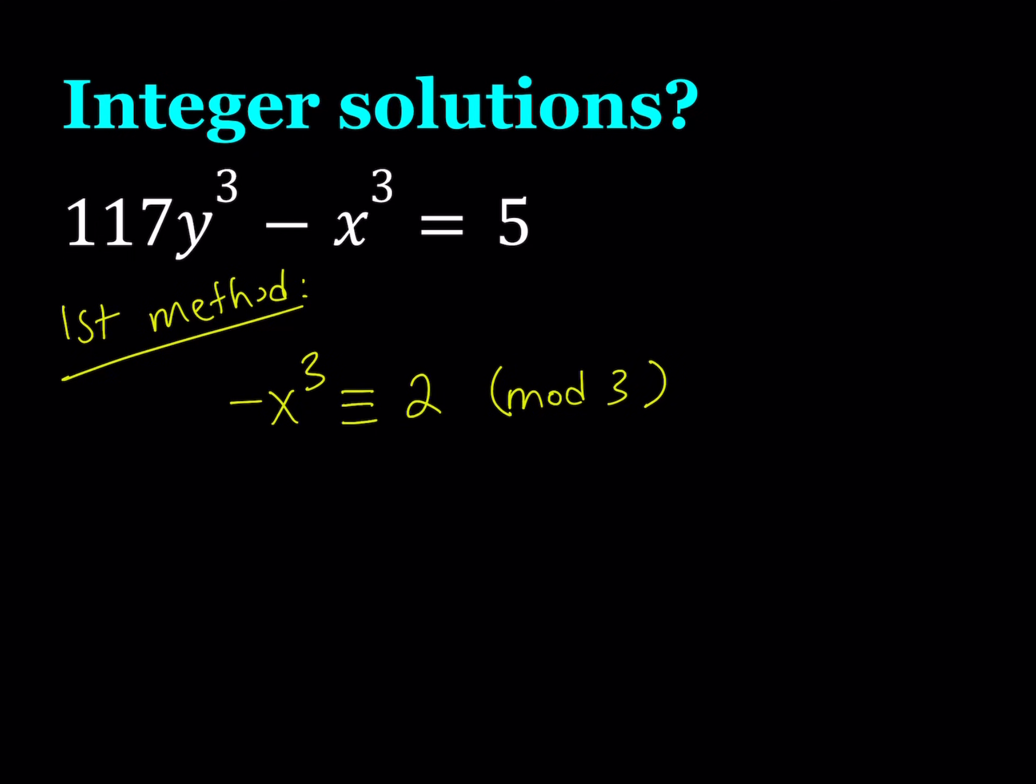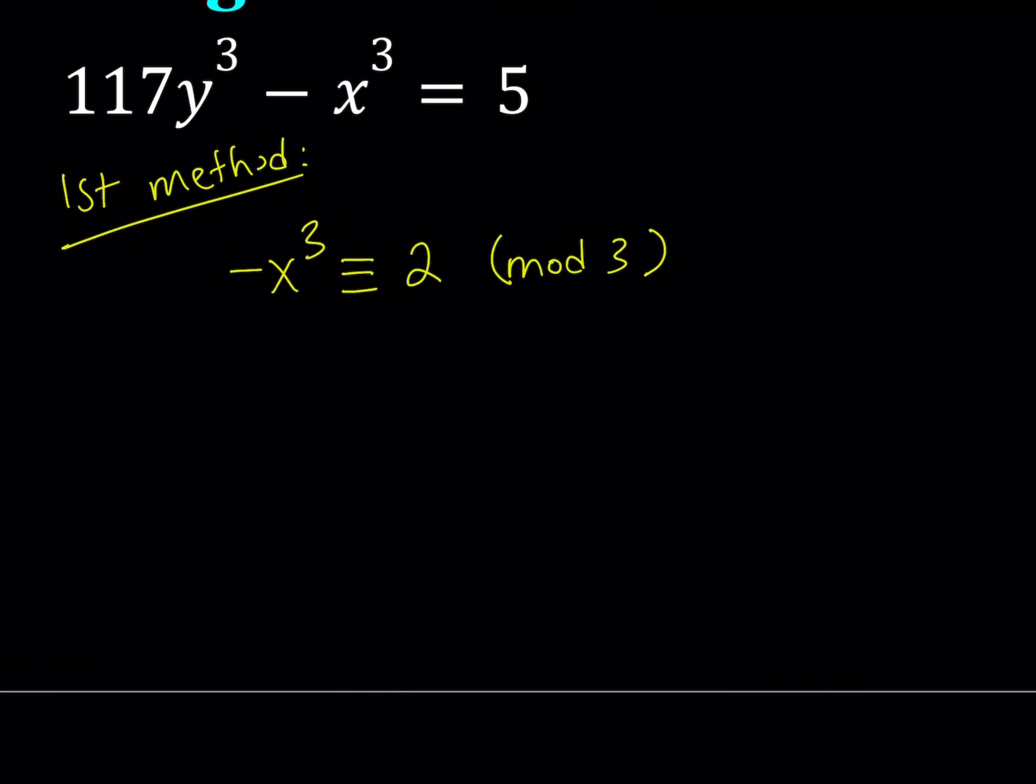Now, we can definitely multiply both sides by negative 1, because multiplication is allowed. Division is kind of tricky. So, we can write this as x³ is congruent to negative 2 mod 3. And, since negative 2 basically means 1, so you can write it as x³ is congruent to 1 mod 3.